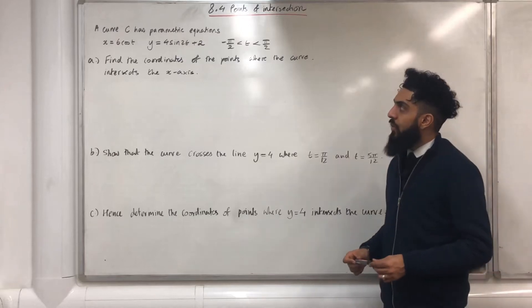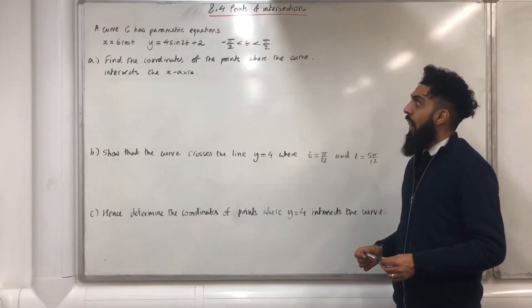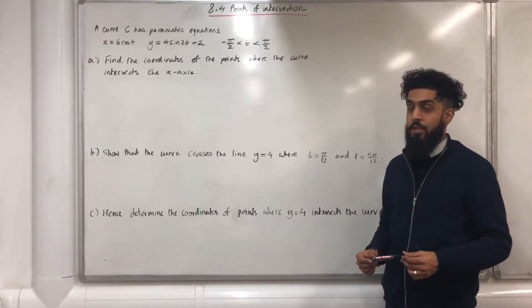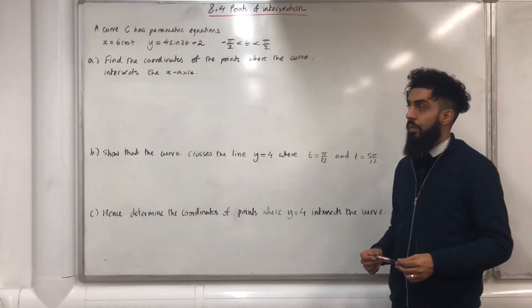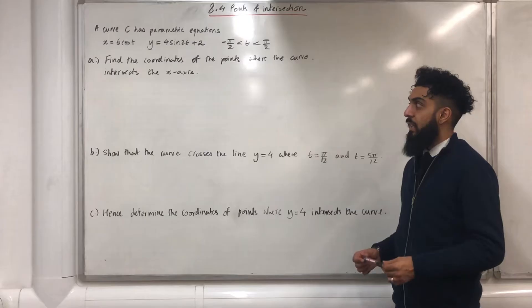Here's a past exam question. A curve C has parametric equations x equals 6 cos t, y equals 4 sin 2t plus 2, and the domain for t is t is more than minus pi over 2, but less than pi over 2. Part A, find the coordinates of the points where the curve intersects the x-axis.